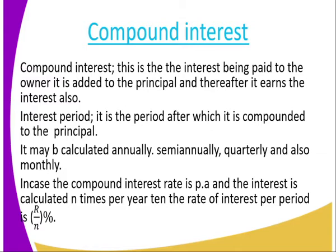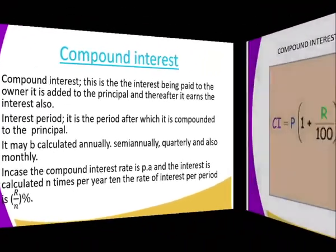In case the Compound Interest rate is per annum and the interest is calculated n times per year, then the rate of interest per period is r divided by n. For example, if it is compounded quarterly — that is 4 times — then your rate becomes r divided by 4.